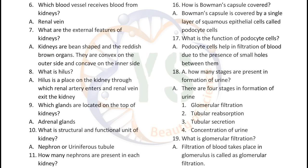How is Bowman's capsule covered? Bowman's capsule is covered by a single layer of squamous epithelial cells called podocyte cells. What is the function of podocyte cells? Podocyte cells help in filtration of blood due to the presence of small holes between them.